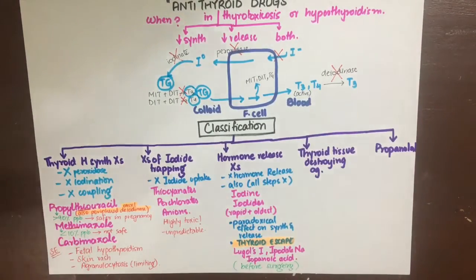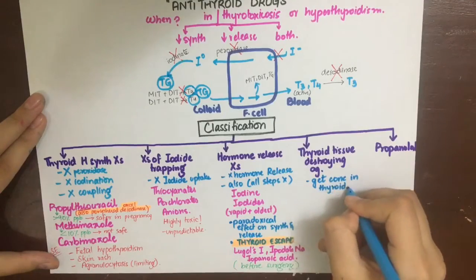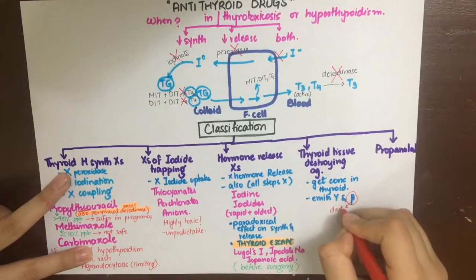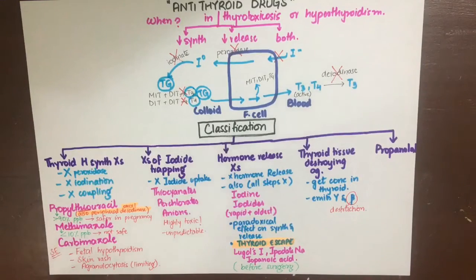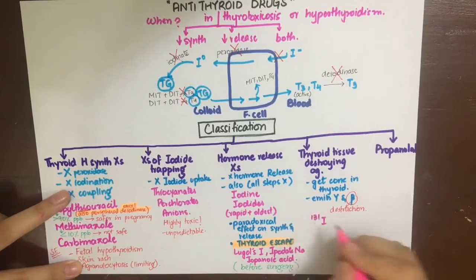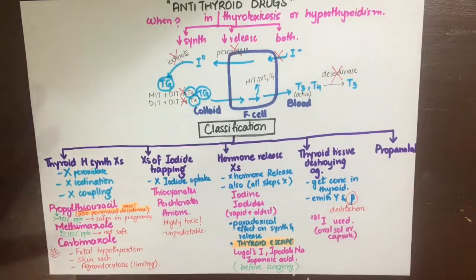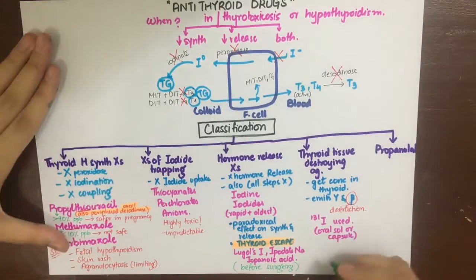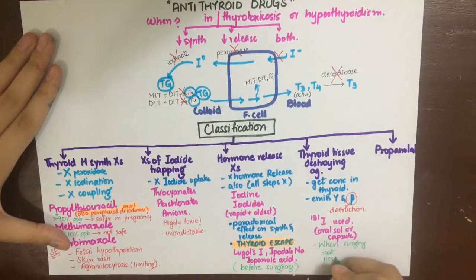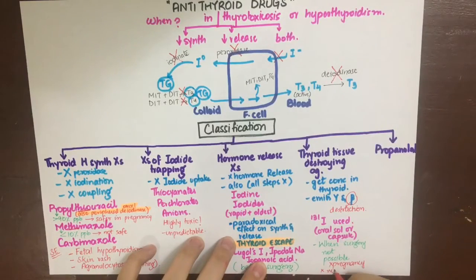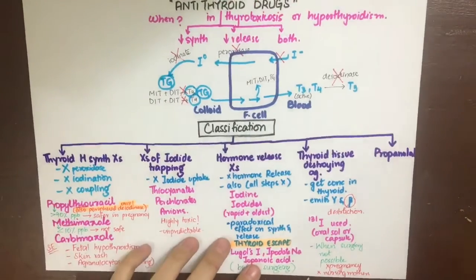The next class of drugs acts by destroying thyroid tissue — radioactive iodine. It concentrates in the thyroid gland the same way stable iodine does, then emits gamma rays and beta particles. The beta particles cause destruction of follicular cells, leading to fibrosis and correction of the hyperthyroid state. This approach is used to treat hyperthyroidism associated with carcinoma or adenoma when surgery is not feasible or is contraindicated. It should not be given in pregnancy, to nursing mothers, or to children. Side effects include slow action and the risk of hypothyroidism if there is excess thyroid tissue damage.